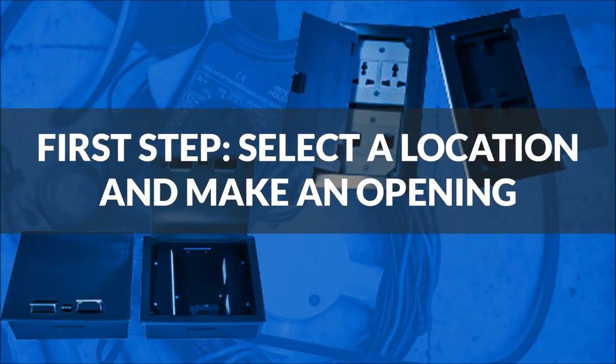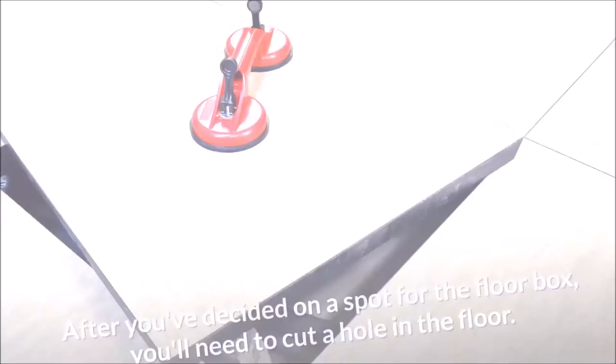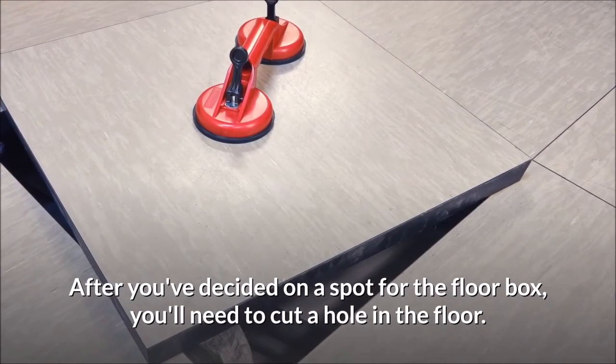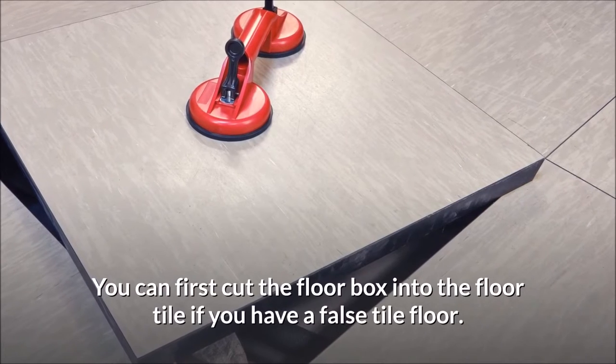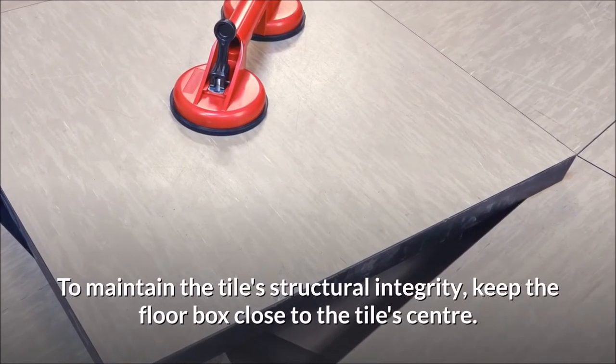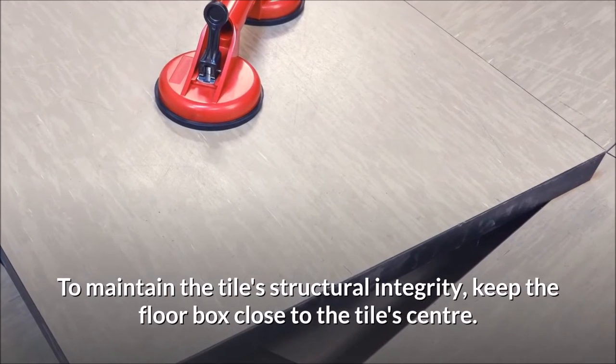First step, select a location and make an opening. After you've decided on a spot for the floor box, you'll need to cut a hole in the floor. You can first cut the floor box into the floor tile if you have a false tile floor. To maintain the tile's structural integrity, keep the floor box close to the tile's center.